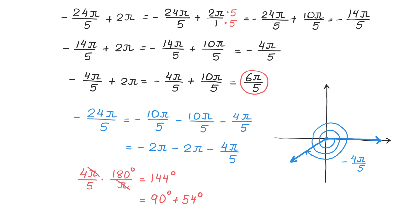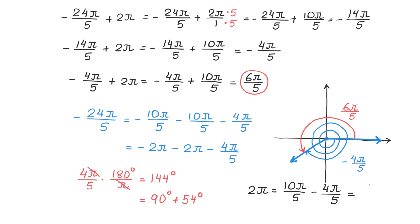The coterminal angle must be between 0 and 2 pi radians with the same initial side and the same terminal side. The measure of this angle is 6 pi over 5, because one full rotation is 2 pi, which we can write as 10 pi over 5, and if we subtract 4 pi over 5, we get 6 pi over 5. We got the same result as with the first method. This angle is coterminal with the given angle of negative 24 pi over 5. I hope you enjoyed the video. Please subscribe and thank you for watching.